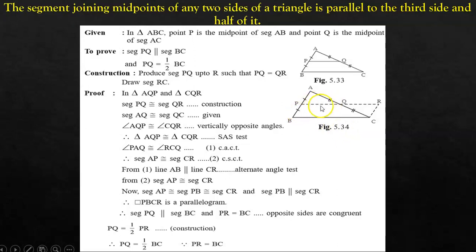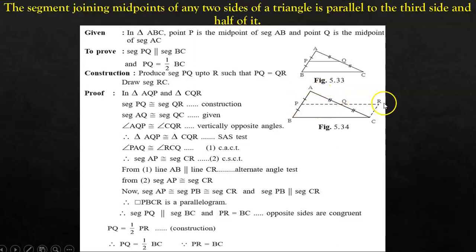Therefore, since PBCR is a parallelogram, segment PQ is parallel to BC — opposite sides of a parallelogram are parallel and also equal — and PR is equal to BC. But we know that PQ is half of PR, done through construction, since PQ and QR are equal. Therefore PQ is half of PR. And since PR is equal to BC, if PQ is half of PR and PR is equal to BC, I can say that PQ is half of BC.